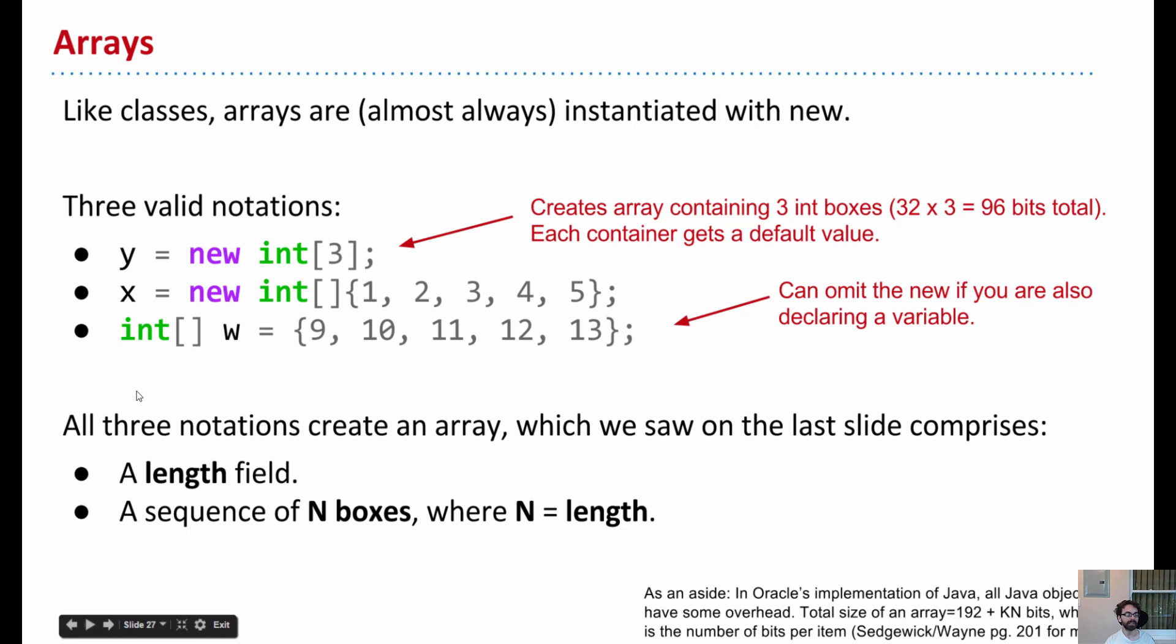Next up, we have our final and somewhat strange syntax. This one is just like the one above, except we don't do new int. And what's sort of funny about this is it only works when you're also declaring a variable at the same time. So if I say int bracket w, that allows me, because I'm declaring right now, to instantiate without the new int keyword. Why is it this way? I don't know. That's the thing you could do.